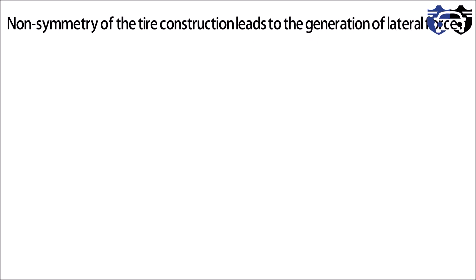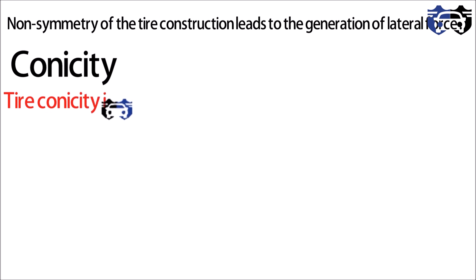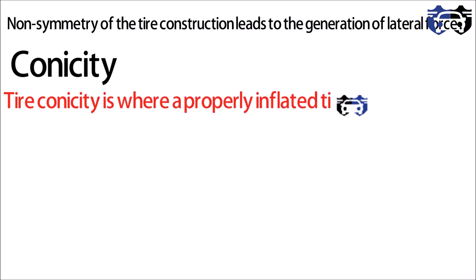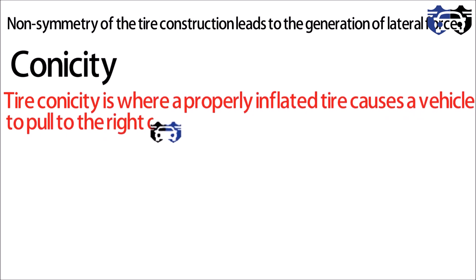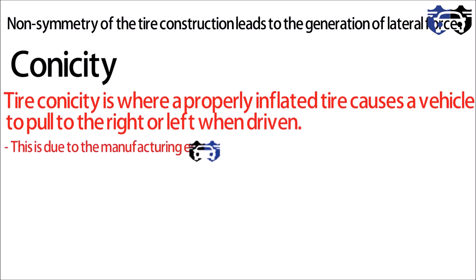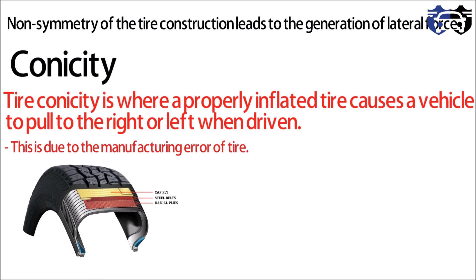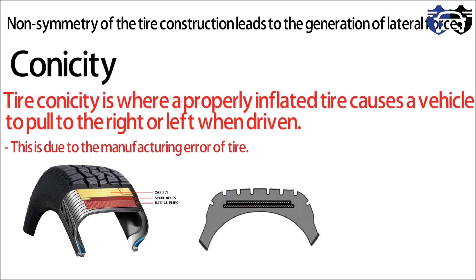The first phenomenon is conicity. Tire conicity is where a properly inflated tire causes a vehicle to pull to the right or left when driven. This is due to a manufacturing error of the tire. In the tire section we have the steel belt — the displacement of steel belts while manufacturing causes conicity.